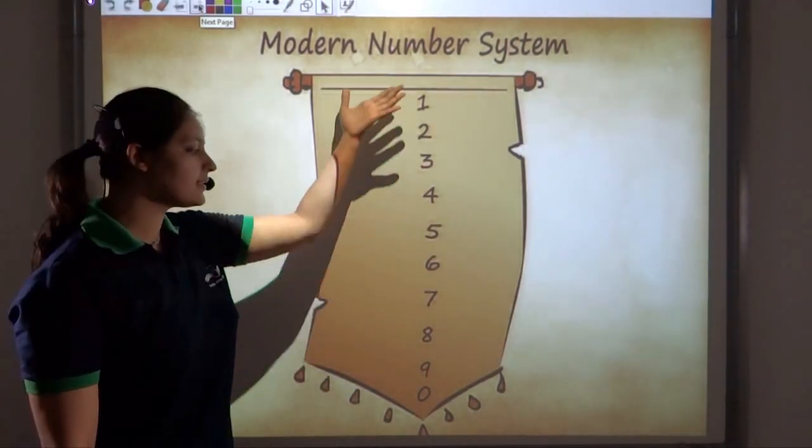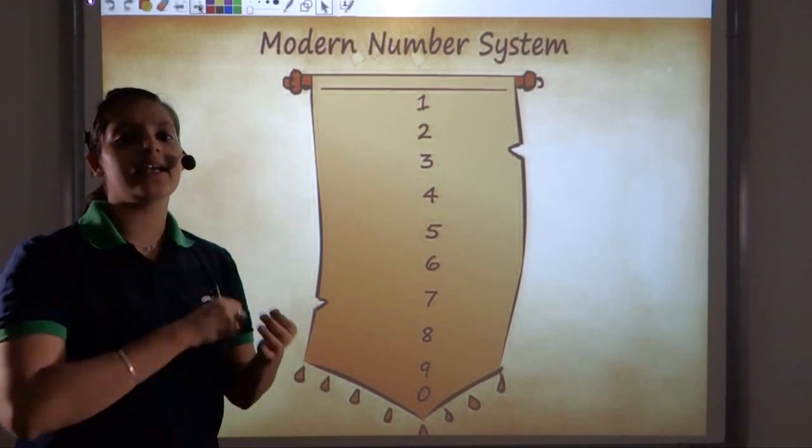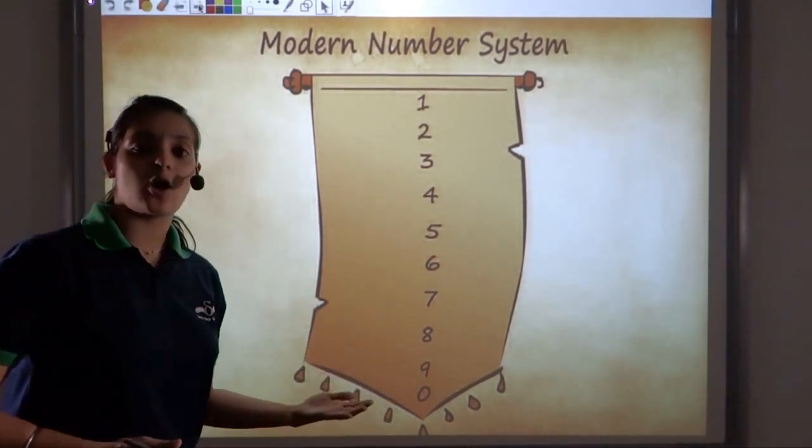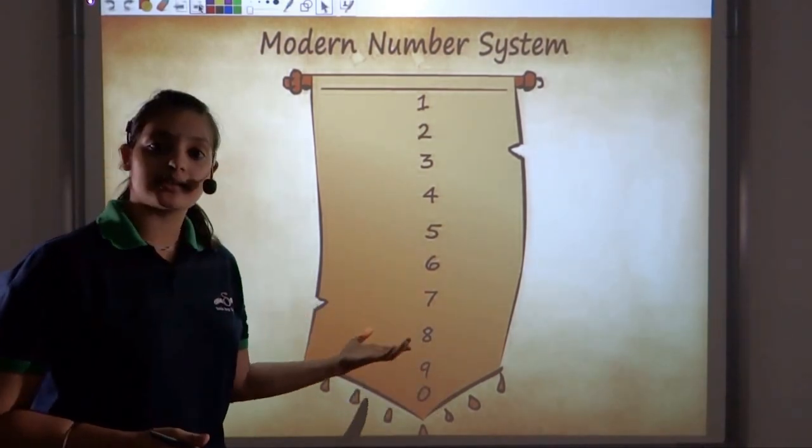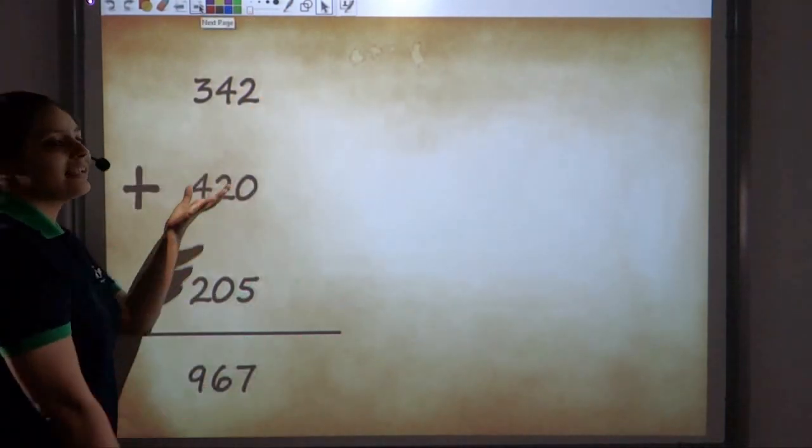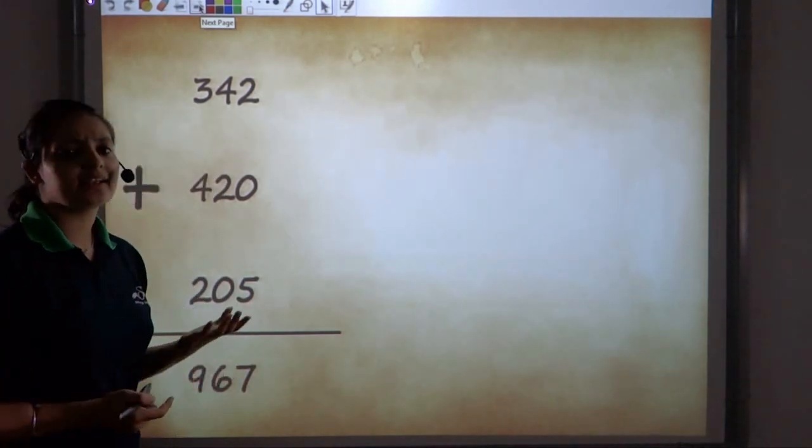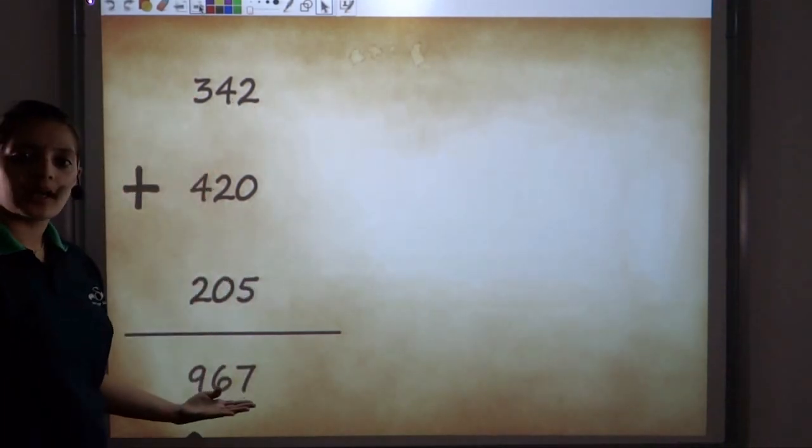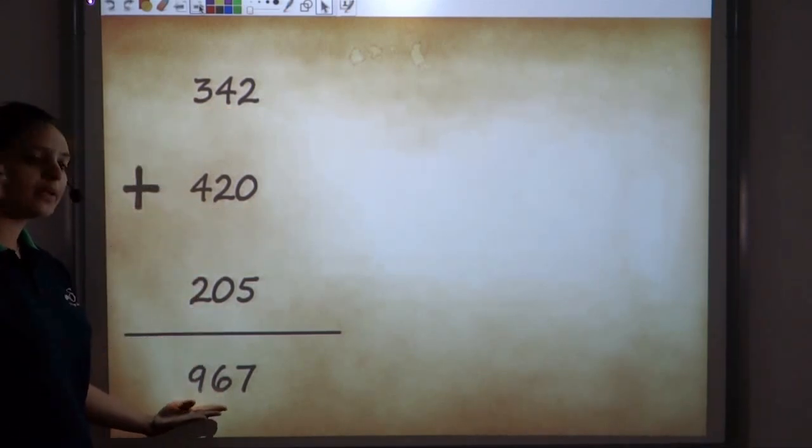So we have seen that this is our modern number system that uses 10 numbers or 10 digits. Well, using these 10 symbols, we can write any number in our modern number system. But now, since you know how we actually got these numbers, how much hard work has got into getting these 10 symbols, I hope you can appreciate the amount of hard work that has gone into these numbers. So don't take these numbers for granted. Let us take this simple addition problem in our number system, which is 342 plus 420 plus 205, which gives me 967.